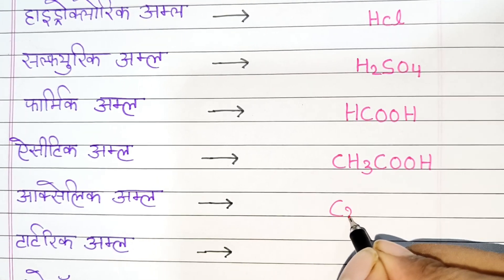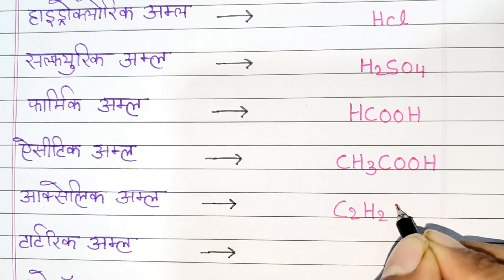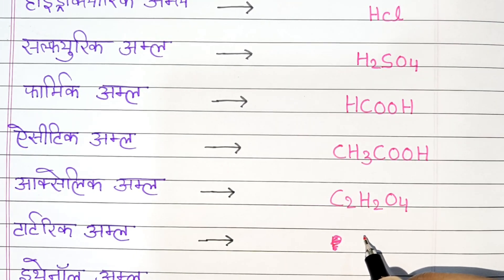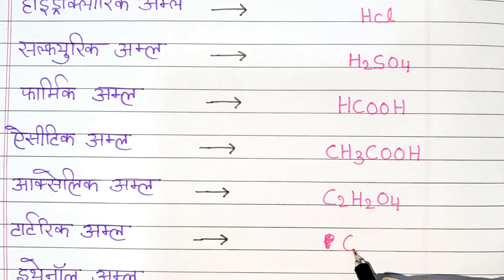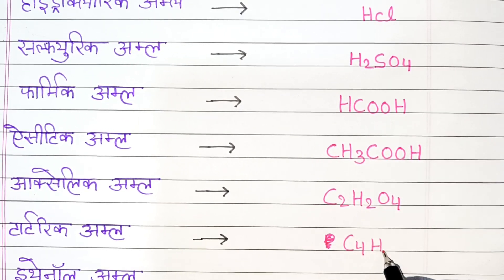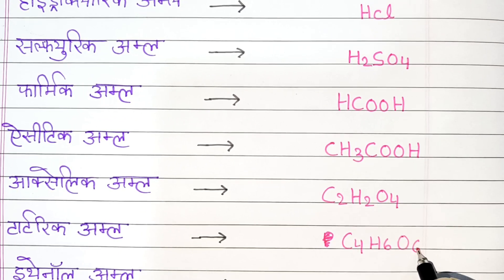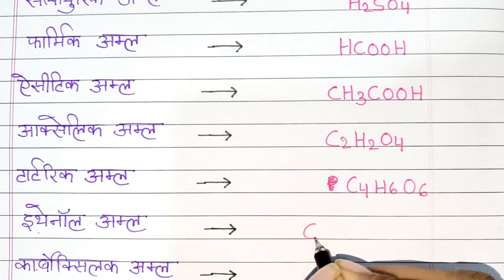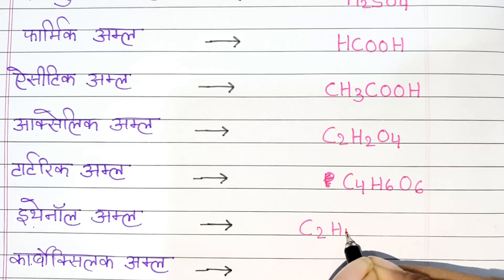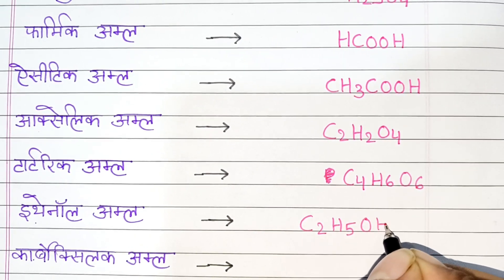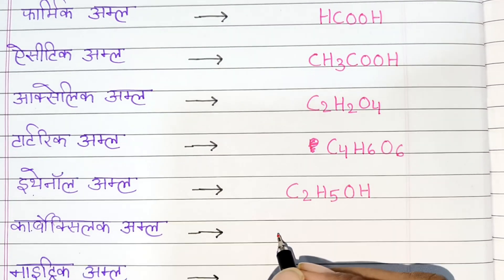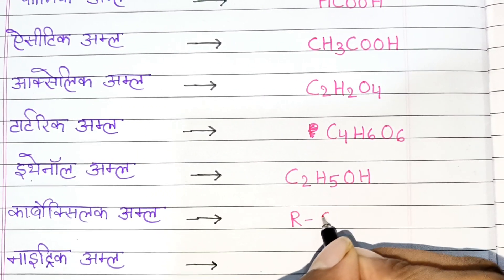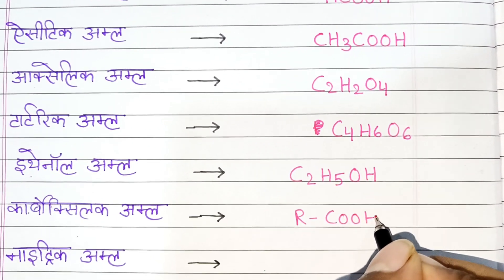5. Tartaric Acid: C4H6O6. 6. Ethanol Acid: C2H5OH. Carboxylic Acid: RCOOH.